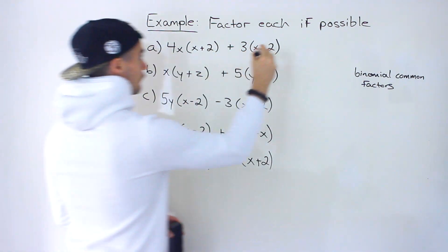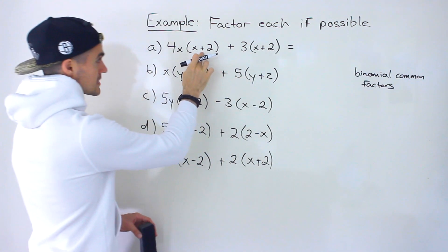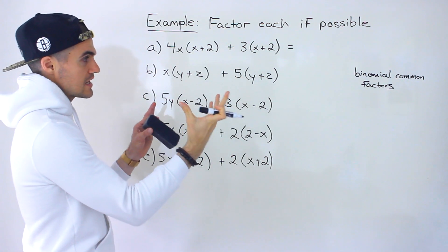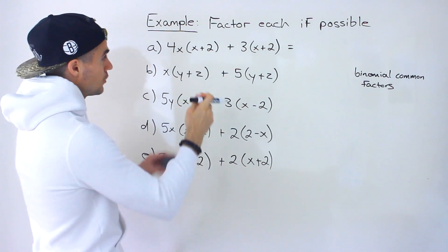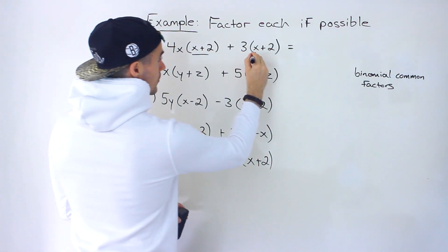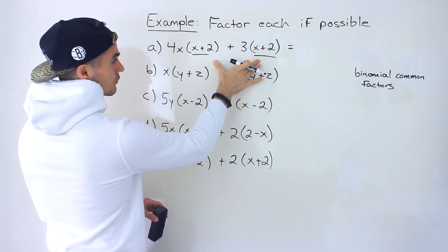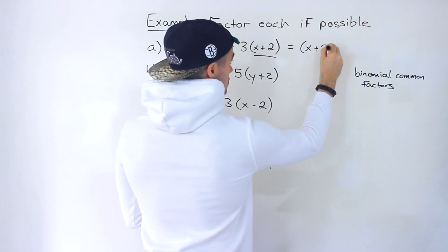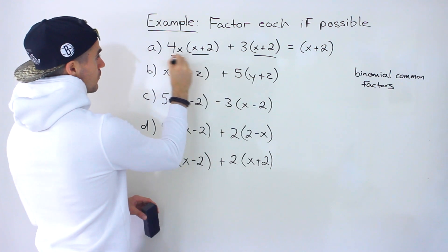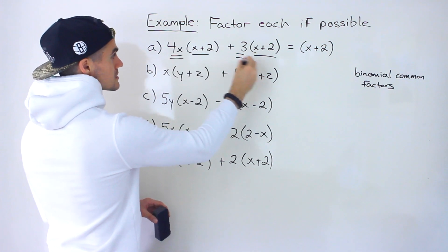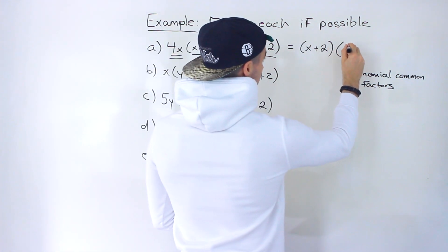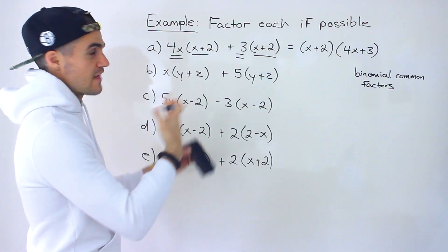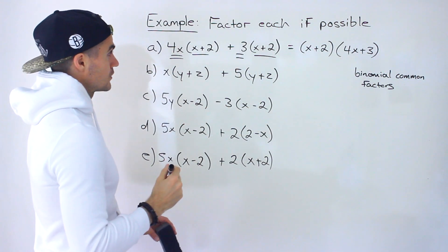So here we got 4x times x plus 2 plus 3 times x plus 2. So instead of just taking out an integer or just one variable, we're going to take out this common binomial factor from both of these. So we take out the x plus 2, and then what are we left with? We'd be left with 4x plus 3. Like that. And that ends up being the factored version.